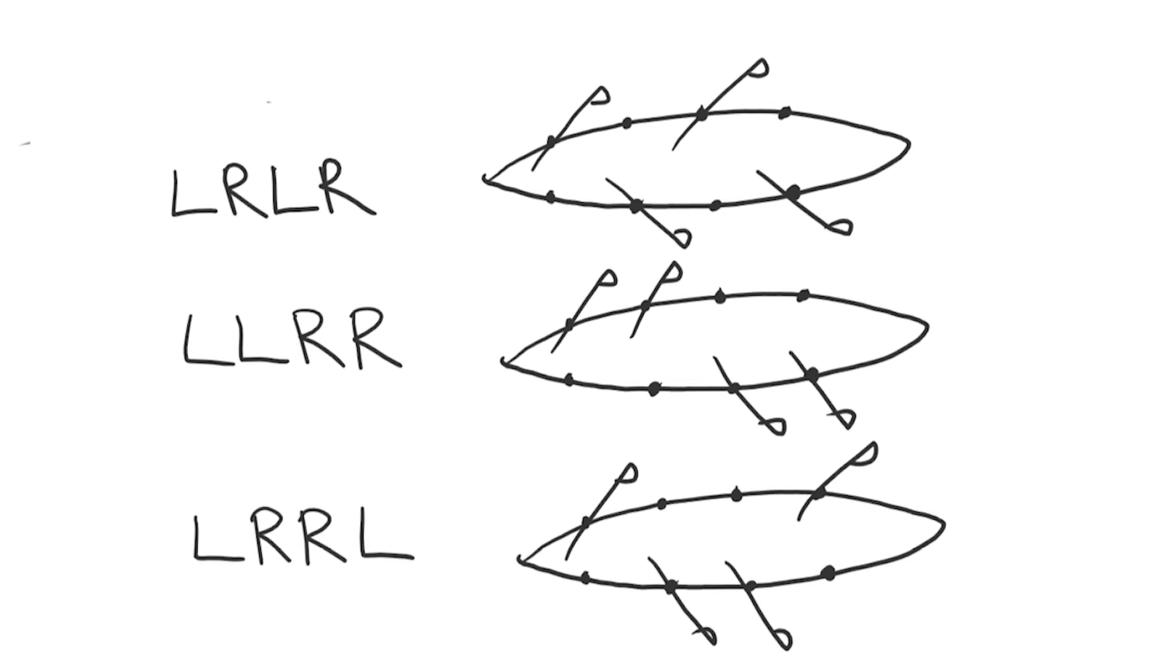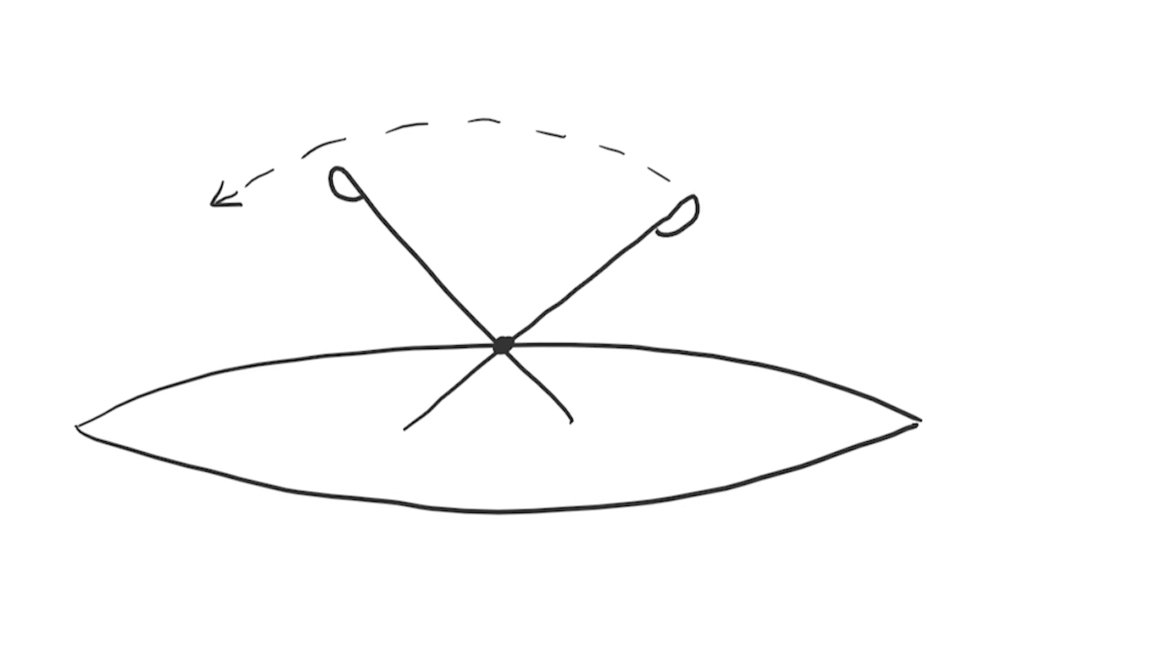The movement of each oar in a single stroke can be resolved into two directions of force, one in the direction opposite to forwards travel, and another perpendicular to this, which we can call the transverse force. The former force stays in the same direction throughout the stroke, while the latter transverse force changes from facing away to facing towards the boat, and this change is the basis of wiggle.